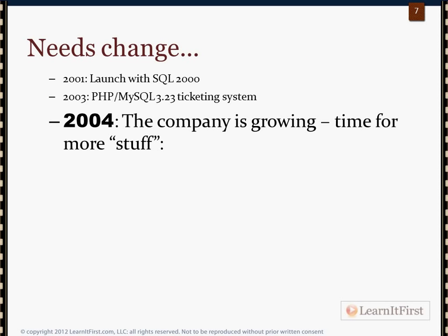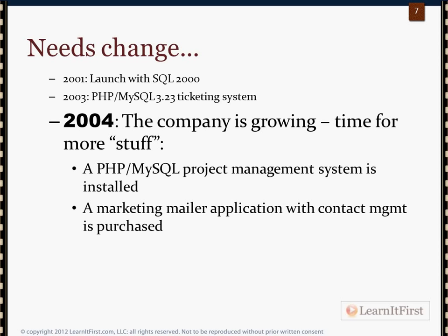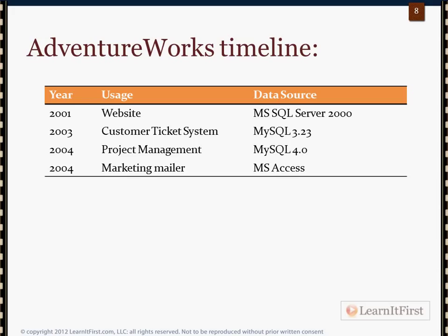In 2004 things are going great and they need project management for their growing, partly off-site workforce, so they buy a PHP/MySQL project management system. They also decide to get into physical mailing and email marketing — tracking open rates, page visits, everything. So they buy a marketing software package. That turns out to be an Access-based system that Marcus down in the marketing department just runs by himself. He already had Access on his computer, so no big deal.